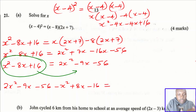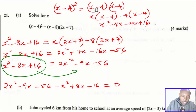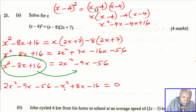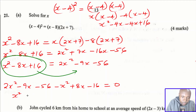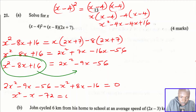After moving everything from the left hand side, we have zero on the left. Now collect like terms on the right: 2x squared minus x squared gives x squared; negative 9x plus 8x gives negative x; and negative 56 minus 16 gives negative 72. So the equation is x squared minus x minus 72 equals zero.